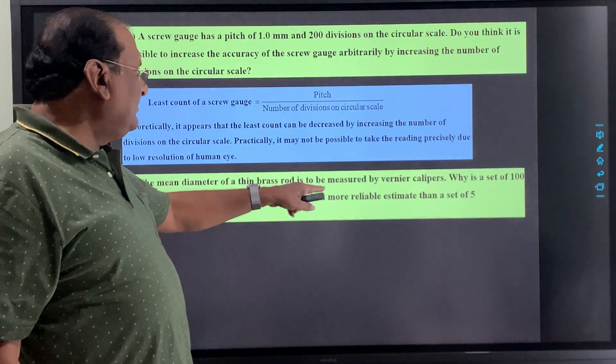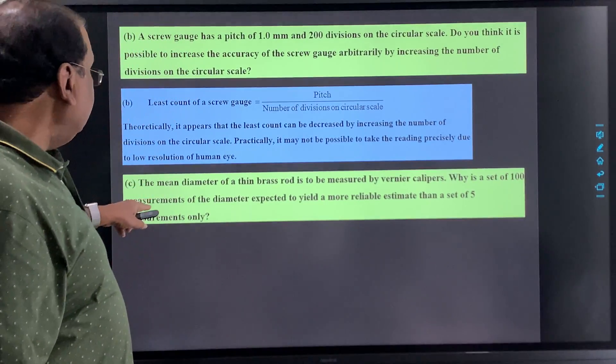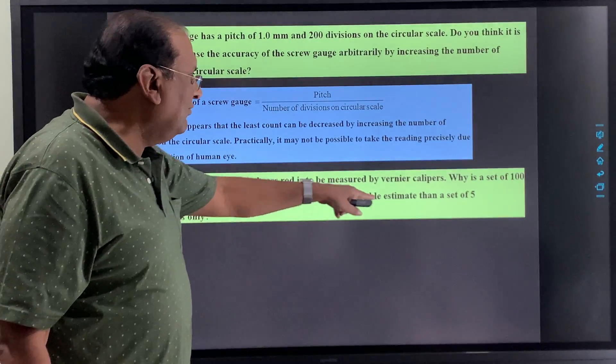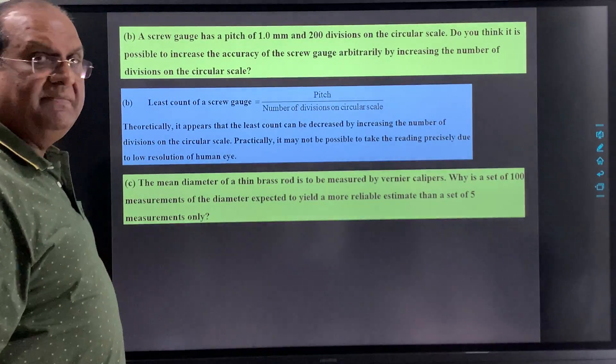The next one. The mean diameter of a thin brass rod is to be measured by vernier calipers. Why is a set of hundred measurements of the diameter expected to yield a more reliable estimate than a set of five measurements only?